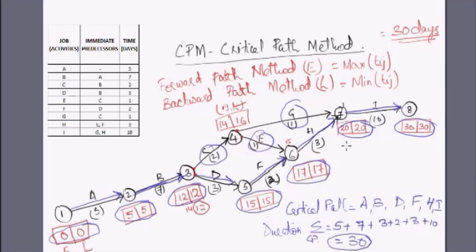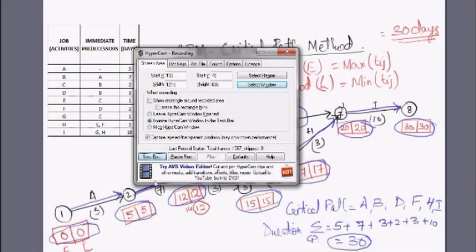The Critical Path Method focuses on identifying the critical activities of a project and managing them — that is why it is called the Critical Path Method. The gaps available for non-critical activities are called slack time or float time, which we will cover in the next class.